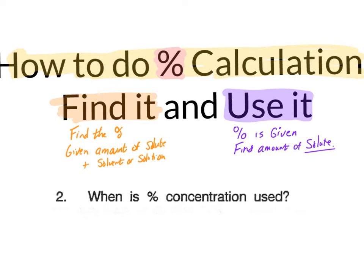When we look at percent concentration, the most common place we use this is when we have a mixture with many different solutes. For example, air is 80% nitrogen, 19% oxygen, 1% argon, and 0.1% hydrogen. Percent calculations are also used when we have fairly large amounts of solute in comparison to the solvent, as opposed to trace amounts.